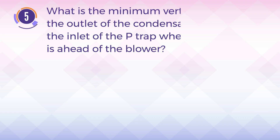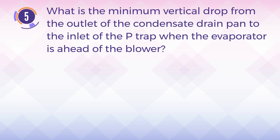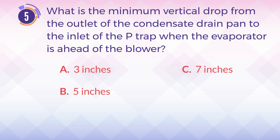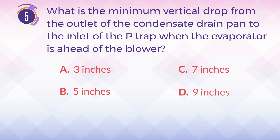Number 5. What is the minimum vertical drop from the outlet of the condensate drain pan to the inlet of the P-trap, when the evaporator is ahead of the blower? A. 3 inches. B. 5 inches. C. 7 inches. D. 9 inches.